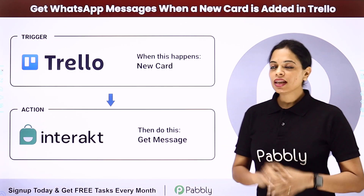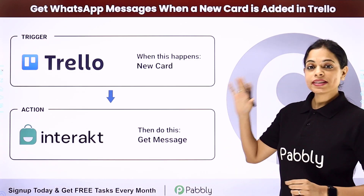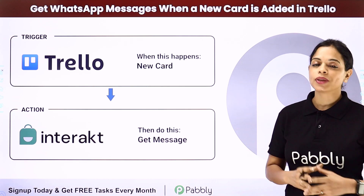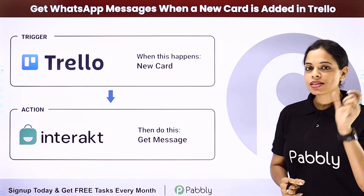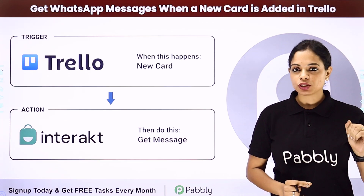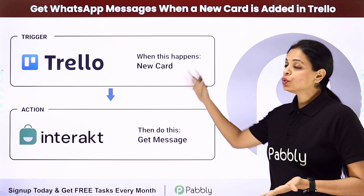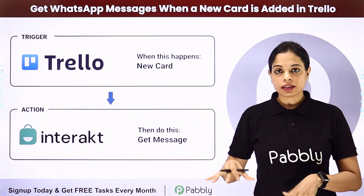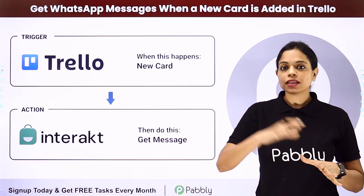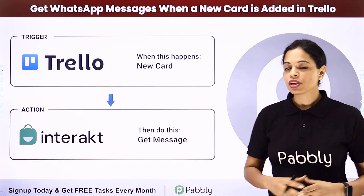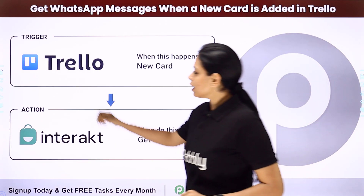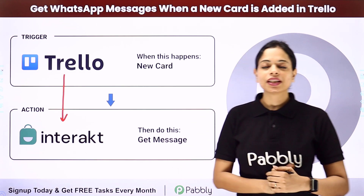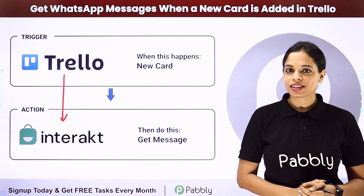In this video, we are going to see how to send WhatsApp messages when a new card is created in Trello. Trello is a project management software, and every time a new card is created, I want my admin to be updated about the same through a WhatsApp message. To integrate the two applications, we can use Pabbly Connect software.